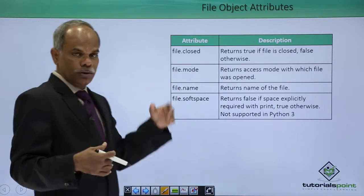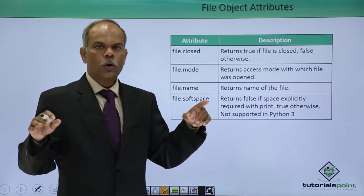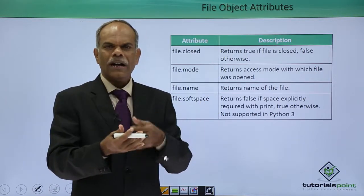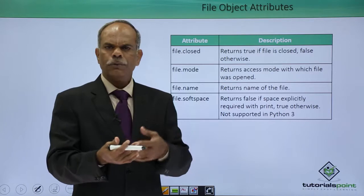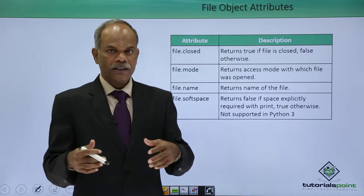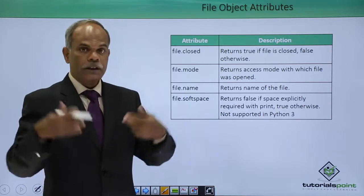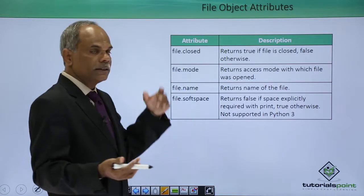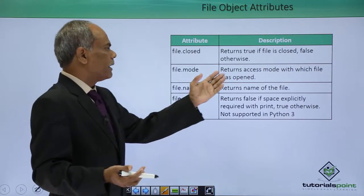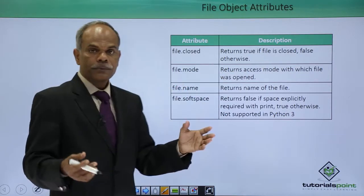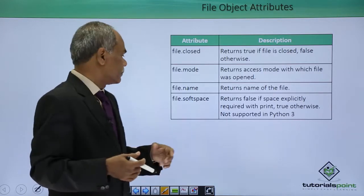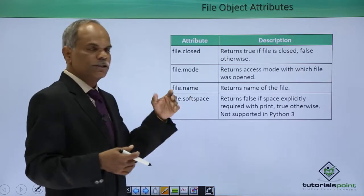file.mode — remember that in the open function we use either w, r, a, r+, w+, wb, etcetera. These are the different modes. The mode in which the file was opened can be verified by testing this attribute. file.mode returns the access mode. file.name will return the name of the file, and file.softspace.